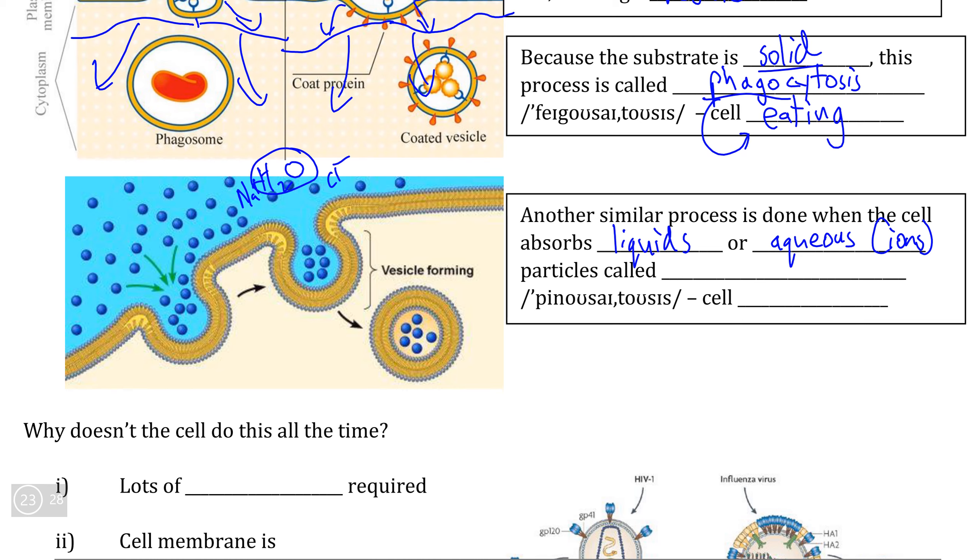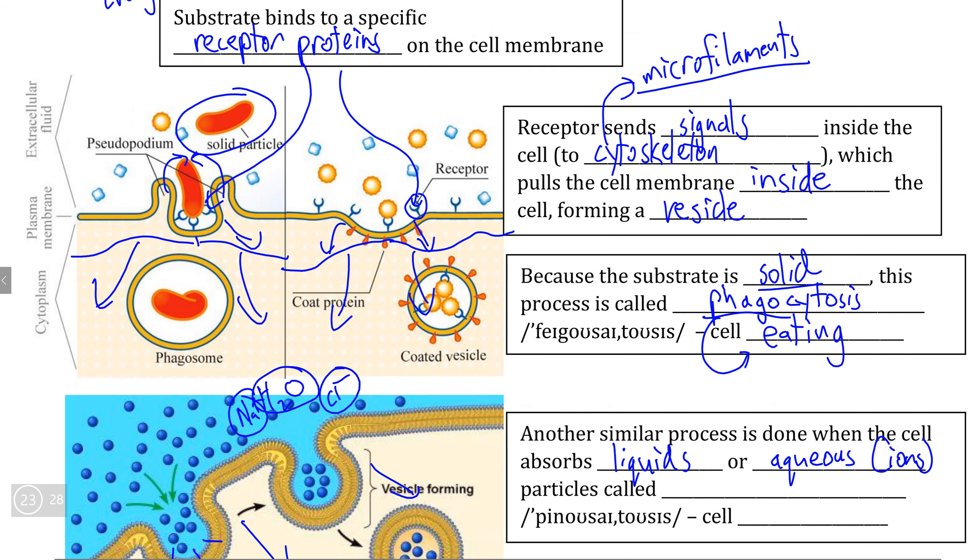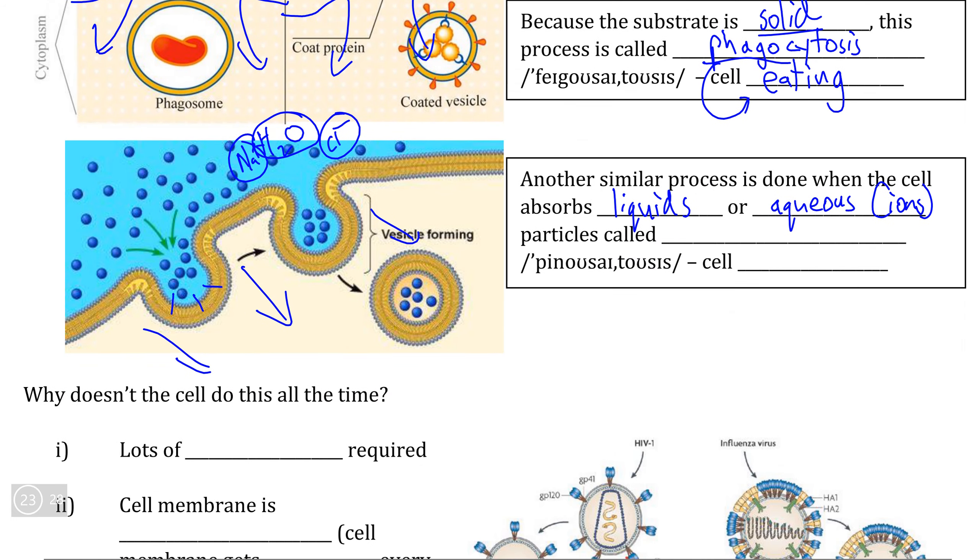what the cell can do is a similar process where the substrate, whether it be a liquid or some sort of aqueous ion, binds to receptor proteins found on the cell membrane, triggers the cytoskeleton to pull parts of the cell membrane in, and instead of during phagocytosis where the cell membrane actually projects outward to swallow a large particle, we find the cell membrane pulling entirely inwards like this, where the two ends pinch off and eventually come together to form a vesicle.